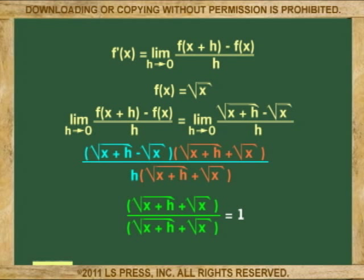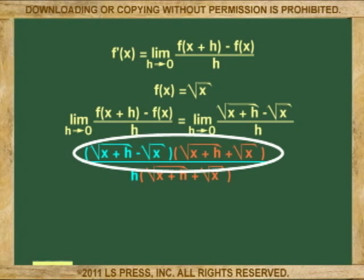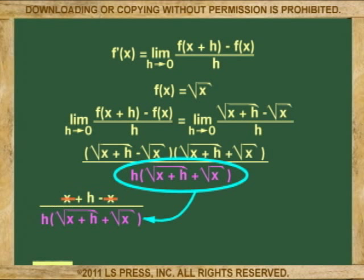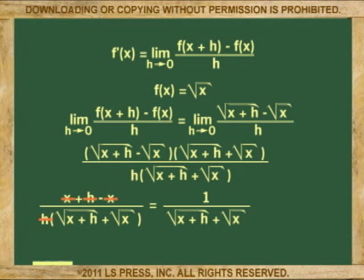We simplify the radicals by multiplying by 1. The 1 in this case is a rational expression that completes the difference of two squares, and yields a numerator with no radicals: x plus h minus x. This is simplified further by eliminating the negative x and positive x. The denominator becomes h times the positive part of the difference of two squares: square root of x plus h plus square root of x. We don't multiply the h because it is being cancelled with the h in the numerator anyway. We are left with 1 over the square root of x plus h plus the square root of x.